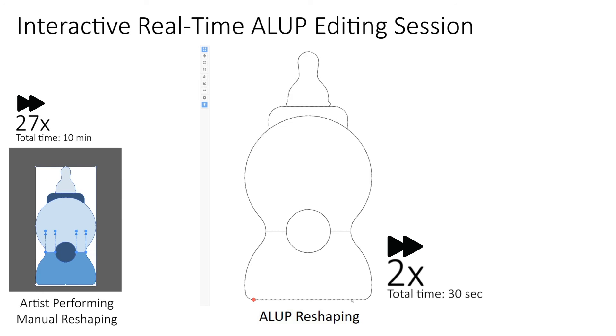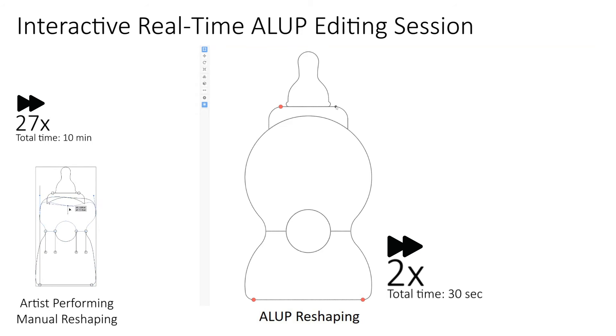Using ALUP, users simply place a series of control handles on the curve network and move these handles to generate reshaping outputs. Our method runs at interactive speeds, making it suitable for real-time editing applications.